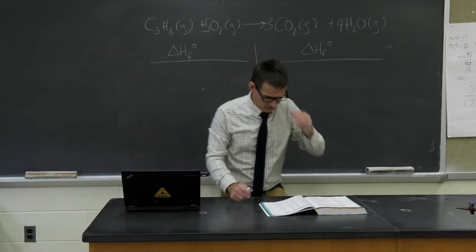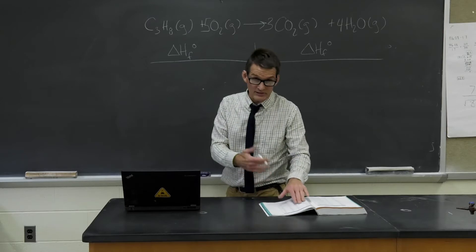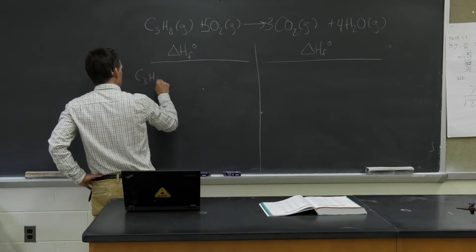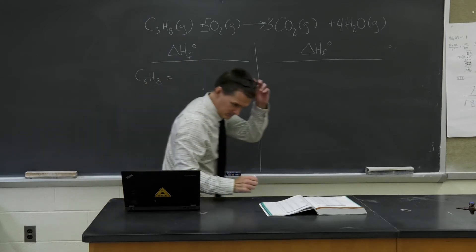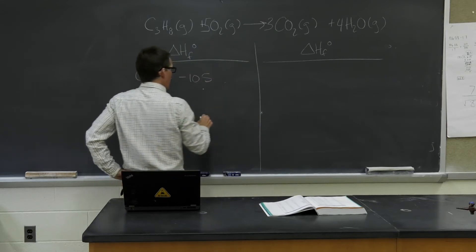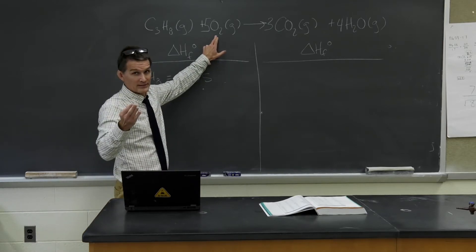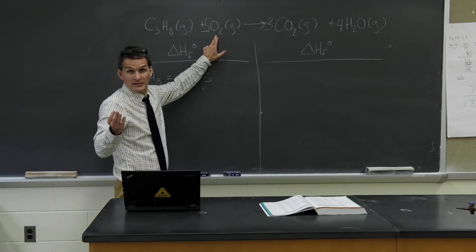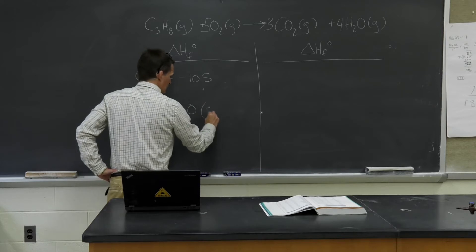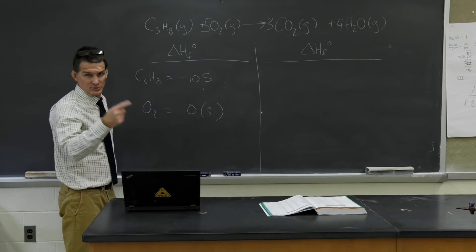I'm going to look through the chart. The standard enthalpy of formation of propane — I'll write these to the nearest one's digit — is negative 105 kilojoules per mole. Oxygen, O2 gas, is the element in its standard state, so that's zero. Even though it isn't zero, we'd have to multiply by five, but since it is zero, we don't need to worry about it.